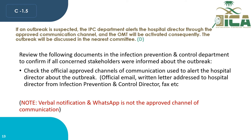If an outbreak is suspected, the infection prevention and control department alerts the hospital director through the approved communication channel, and the OMT will be activated consequently. The outbreak will be discussed in the nearest committee meeting. The auditor must review documents to confirm all concerned stakeholders were informed and check the official approved channel of communication used — such as official email, written letter, or fax addressed to the hospital director.